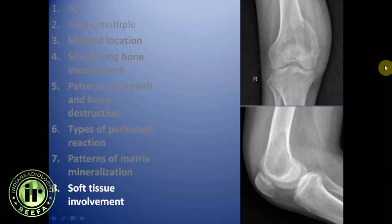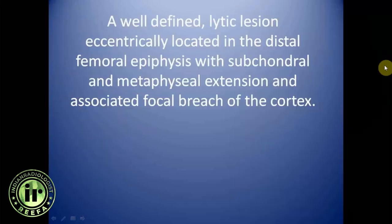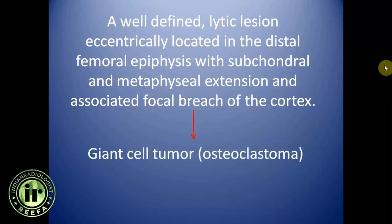There is slight soft tissue involvement in the popliteal region due to cortical breach. This is a well-defined lytic lesion eccentrically located in the distal femoral epiphysis with subchondral and metaphyseal extension and associated focal breach of the cortex. Radiographically, this is giant cell tumor (osteoclastoma), but differentials to consider include chondroblastoma, aneurysmal bone cyst, and brown tumor of hyperparathyroidism.